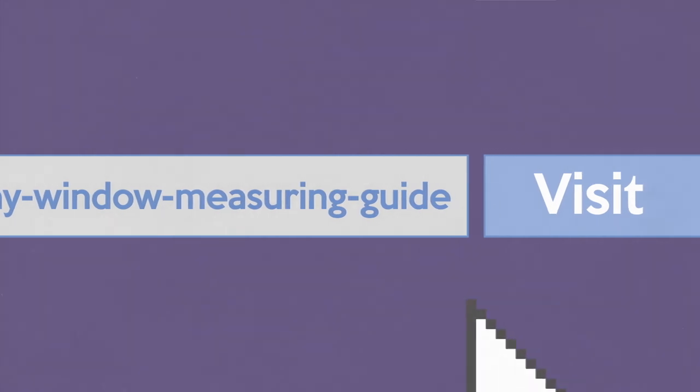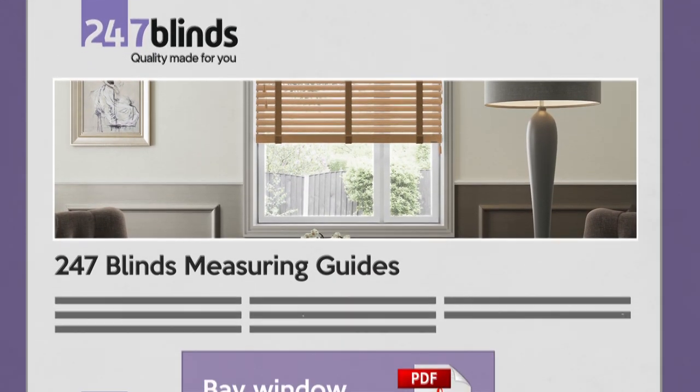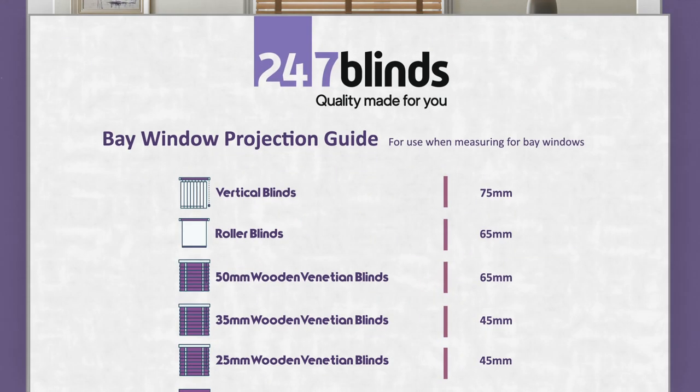Now that's all well and good, but you won't have these brackets to hand. But we have a clever trick that you can use to measure up instead. If you head over to the measuring guide page on our website, or just click the link below, you can download and print off this handy bay window projection guide, which tells you the projection or depth of the brackets for all the different blinds we sell.